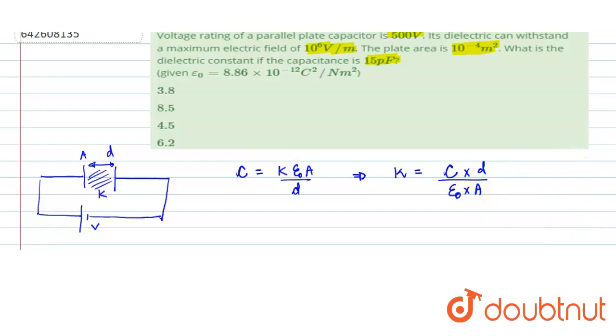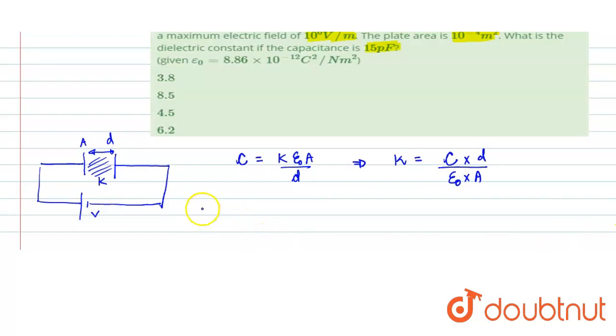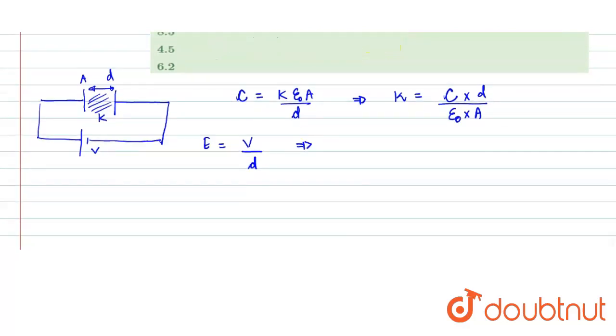D value can be found by writing electric field as potential difference upon D. So D can be written as V upon E.